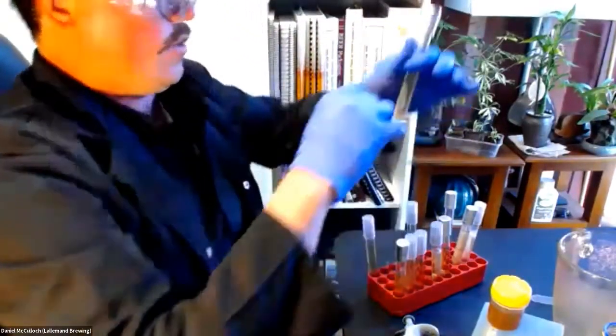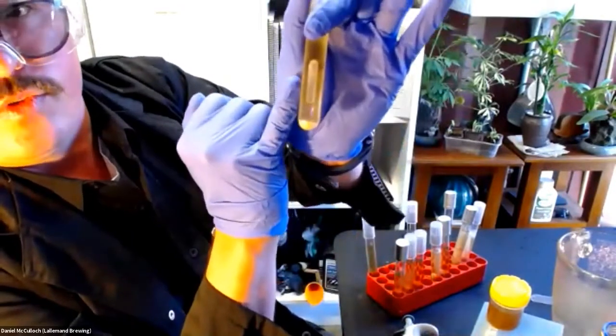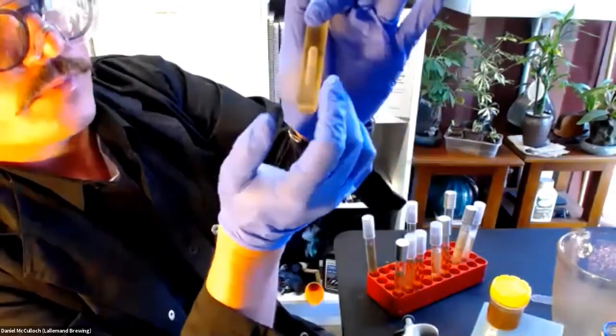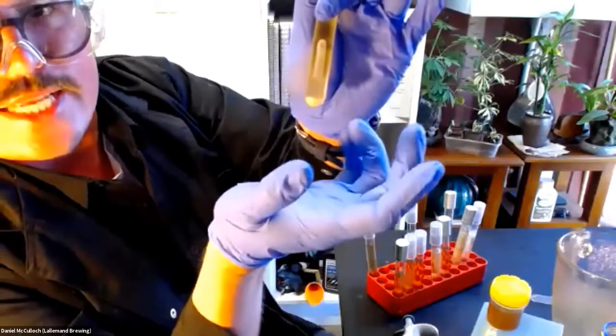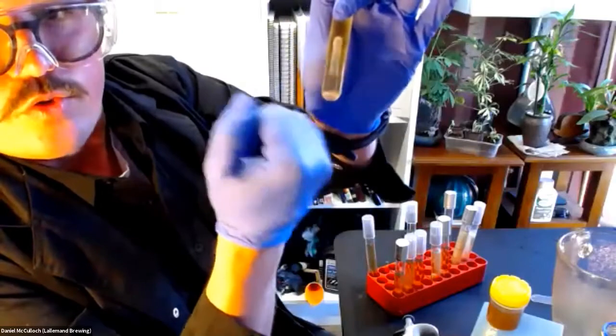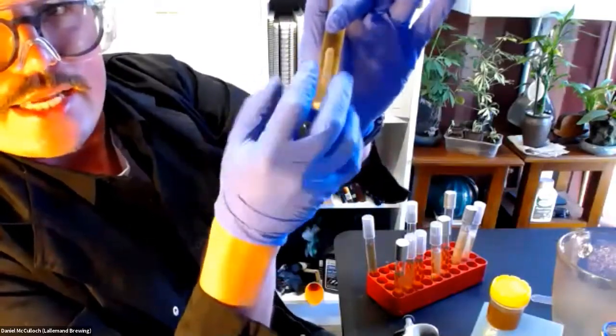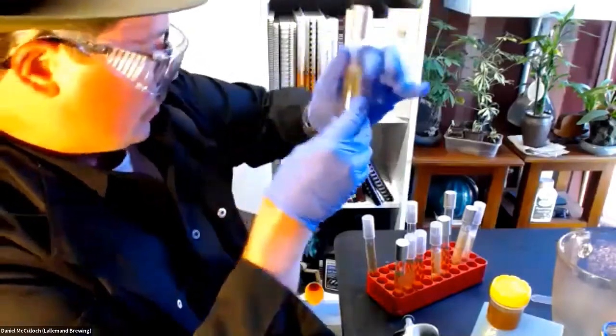Again, in a higher concentration of the Belle Saison, we can see that tube is just full of gas there. And that's showing that in this case, Belle Saison is excreting that enzyme, and it's breaking up those sugars into simple sugars that not only Belle Saison, but any other yeast that's present in the beer can consume.